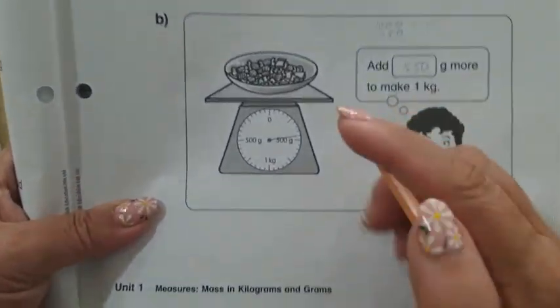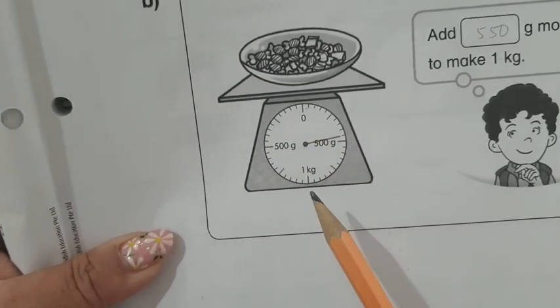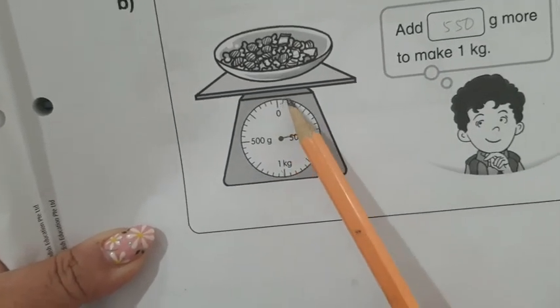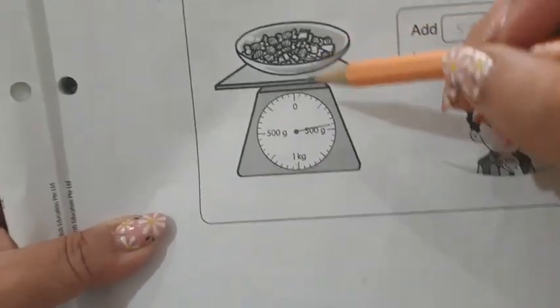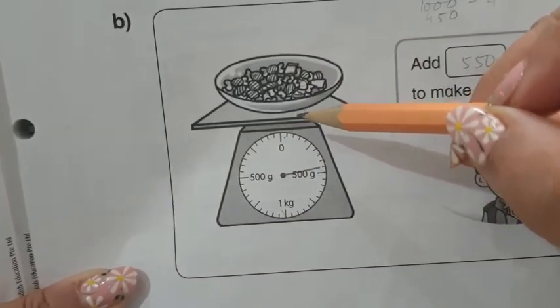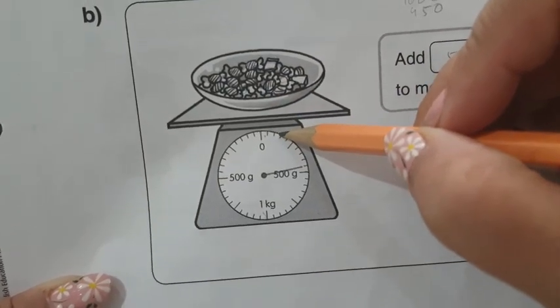Now look at the scale carefully. From 0 to 1 kg, there are 20 lines. So each line is 50. Let's count: 50, 100, 150, 200.